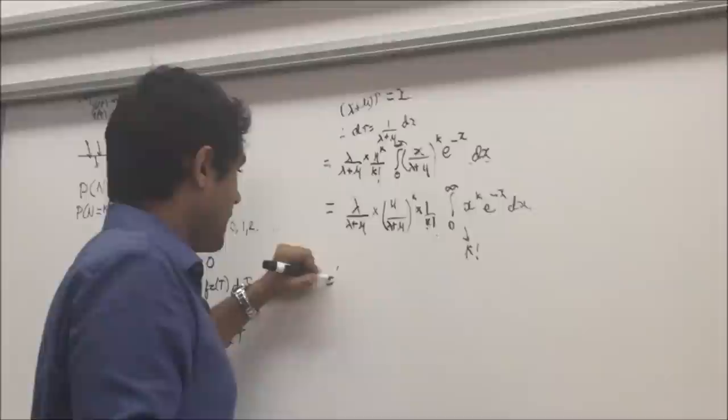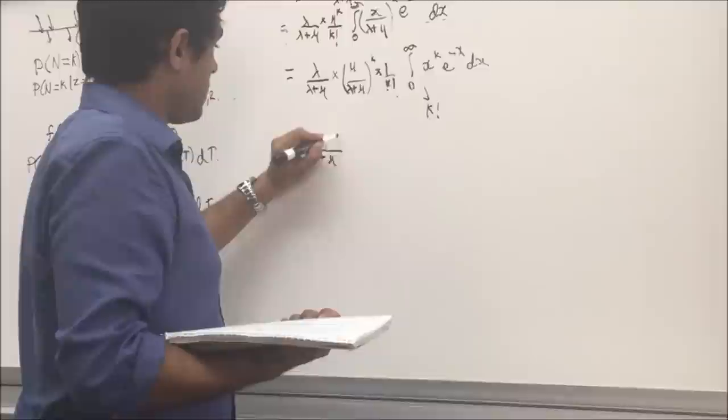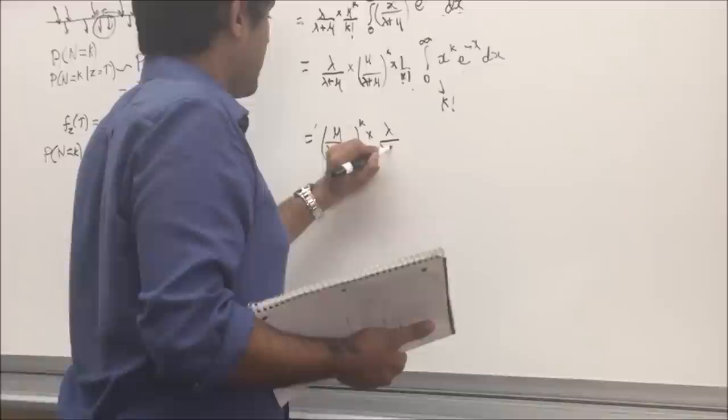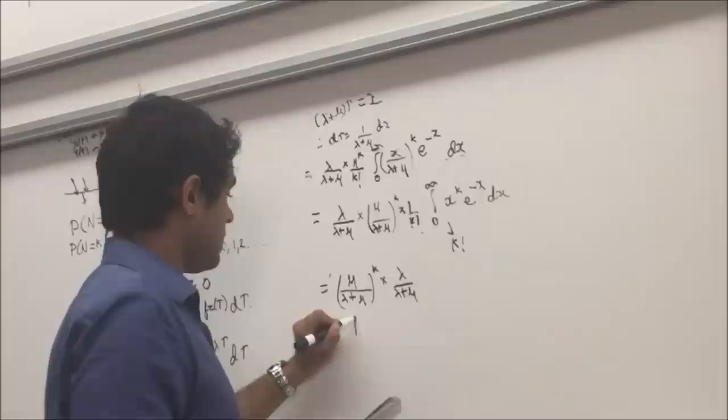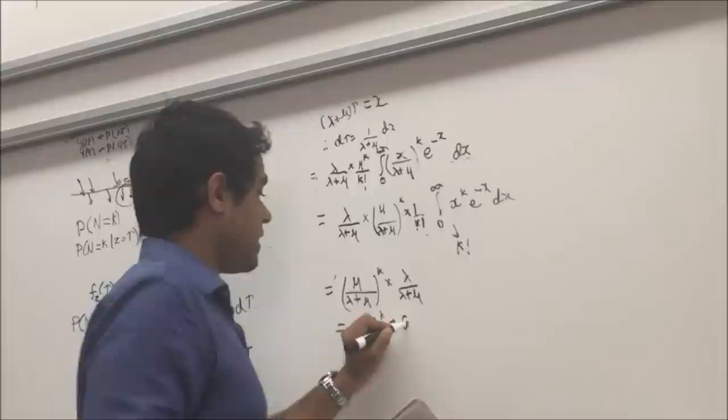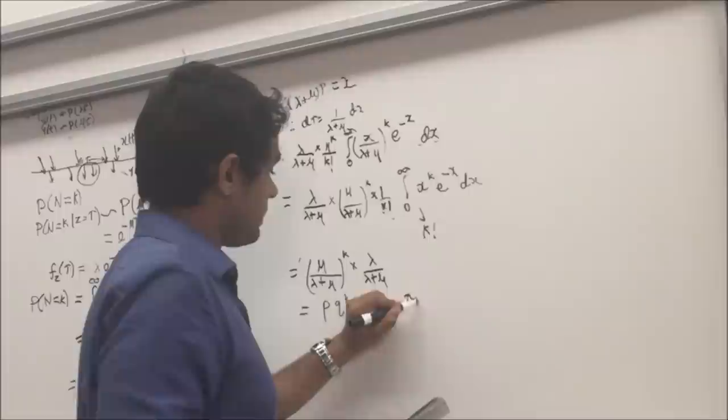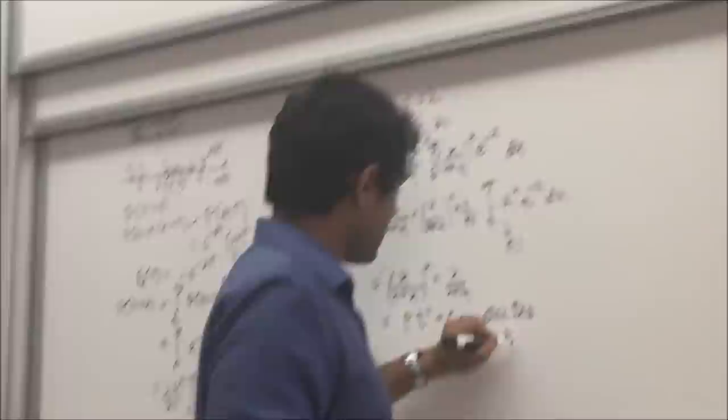So we get mu/(lambda + mu) raised to k, times lambda/(lambda + mu). This can be written as p*q raised to k, which is the geometric distribution, where p equals lambda/(lambda + mu) and q equals mu/(lambda + mu) equals 1 minus p. So that's a very interesting result.